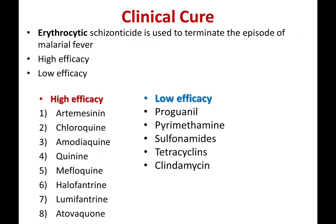For clinical cure, erythrocytic schizonticides are used — drugs which kill the erythrocytic forms residing in the blood. High efficacy drugs include artemisinin, chloroquine, amodiaquine, quinine, mefloquine, halofantrine, lumefantrine, and atovaquone. Low efficacy drugs include proguanil, pyrimethamine, sulfonamides, and antibiotics such as tetracycline and clindamycin.